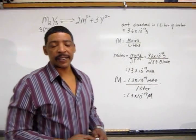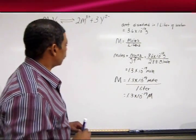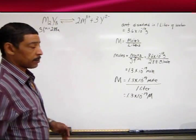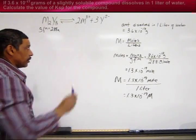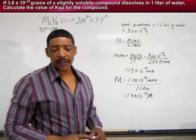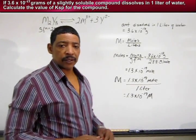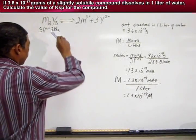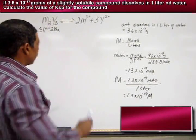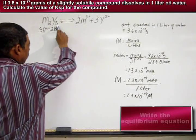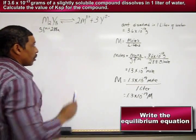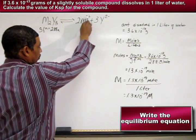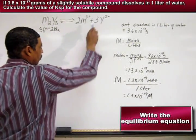Suppose we are asked to determine the KSP value for a slightly soluble compound such as the hypothetical compound M2Y3. The first step in determining the KSP value is to write a proper equilibrium equation where the slightly soluble compound M2Y3 will dissolve in water to produce two M3+ and three Y2- ions.